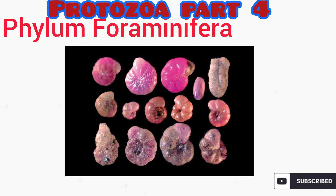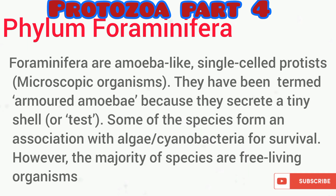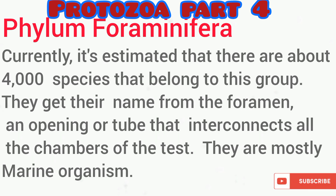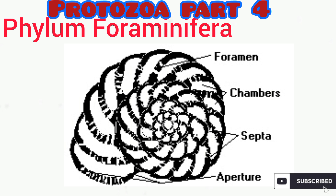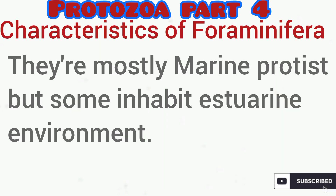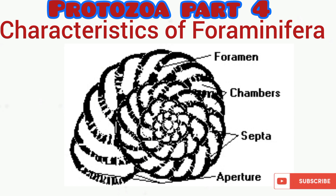Foraminiferans are amoeba-like microscopic single-cell protists. They have been termed the 'armored amoeba' because they secrete a tiny shell called a test. Some are free-living while others can be in symbiotic association with algae. It is estimated that there are around 4,000 species of foraminiferans. Their name is derived from the foramen, which is an opening or tube that interconnects all the chambers.